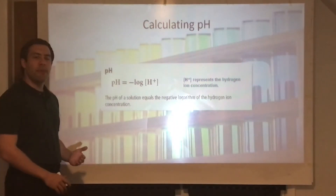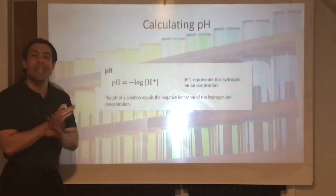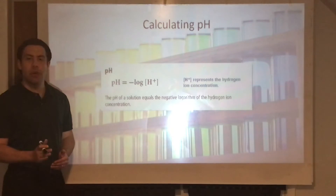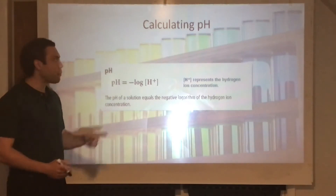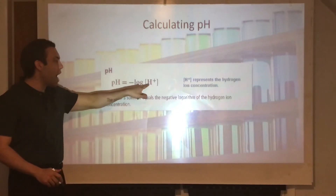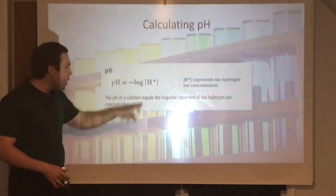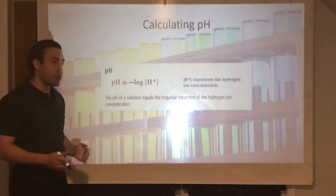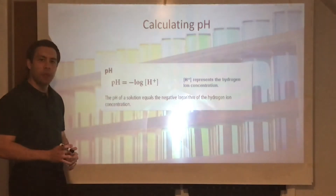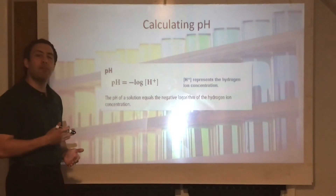You won't be calculating logs for the chemistry regents. However, if you plan on going into AP chemistry next year, you will need to be familiar with this formula. To calculate pH, the formula is: pH equals the negative log of the hydrogen ion concentration. The brackets mean concentration, and H-plus is a hydrogen ion.